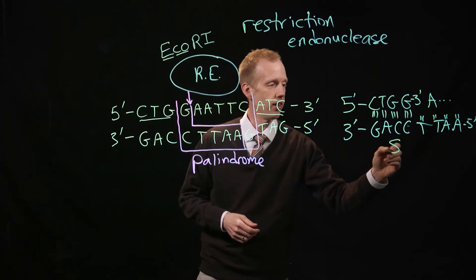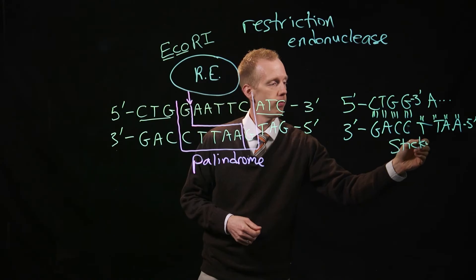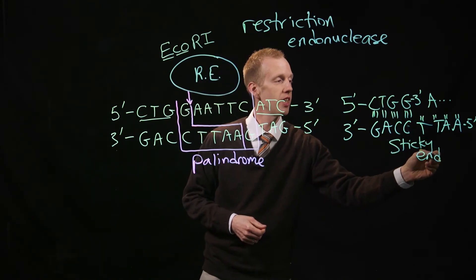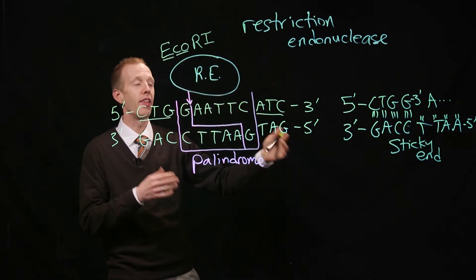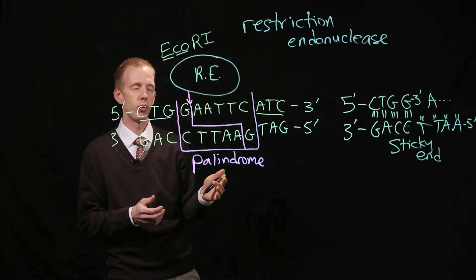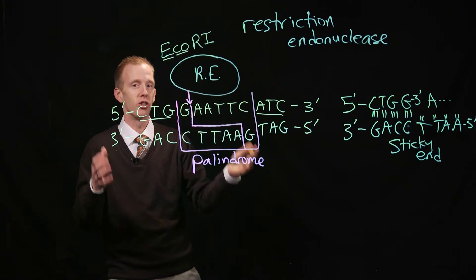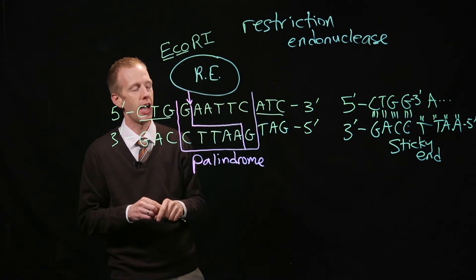This is called a sticky end. This enzyme produces sticky ends because these four nucleotides are hanging off the end of the chromosome and they have nothing to base pair with. Their hydrogen bonds are actively searching for other DNA molecules to hydrogen bond with.